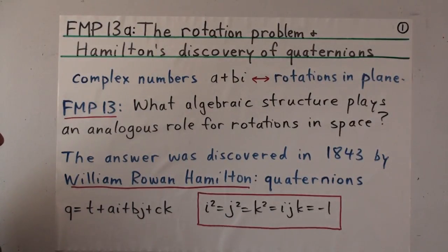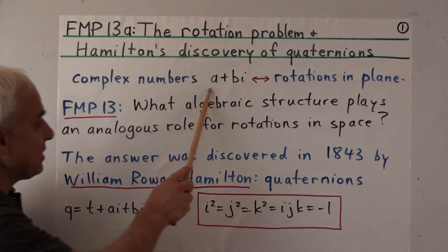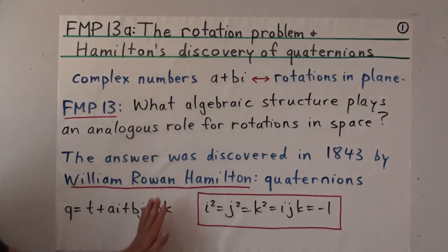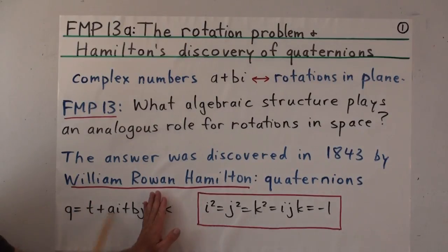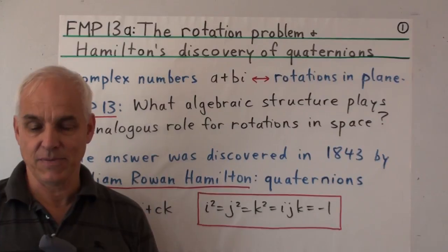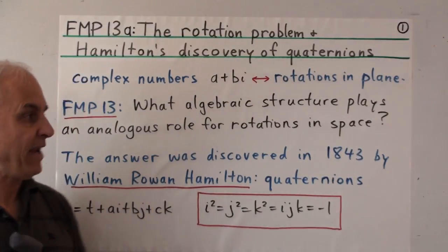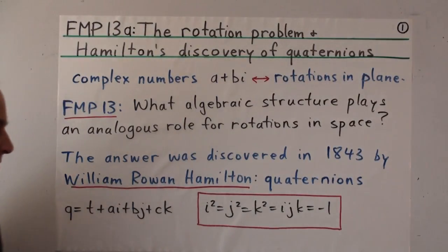For a long time, Hamilton thought that the answer lay in extending the idea of complex numbers from a two-dimensional algebra to a three-dimensional algebra. In other words, he was thinking about vectors of the form t plus ai plus bj, and trying to find a way of introducing an algebraic structure on these three-dimensional vectors — a way of multiplying them that would capture the rotational structure of three-dimensional space.